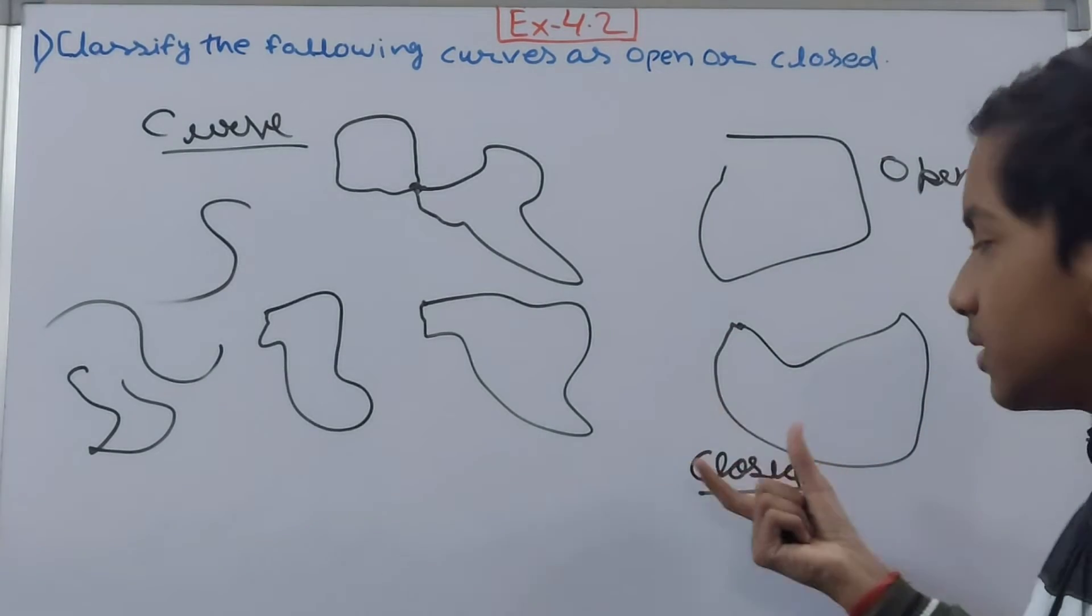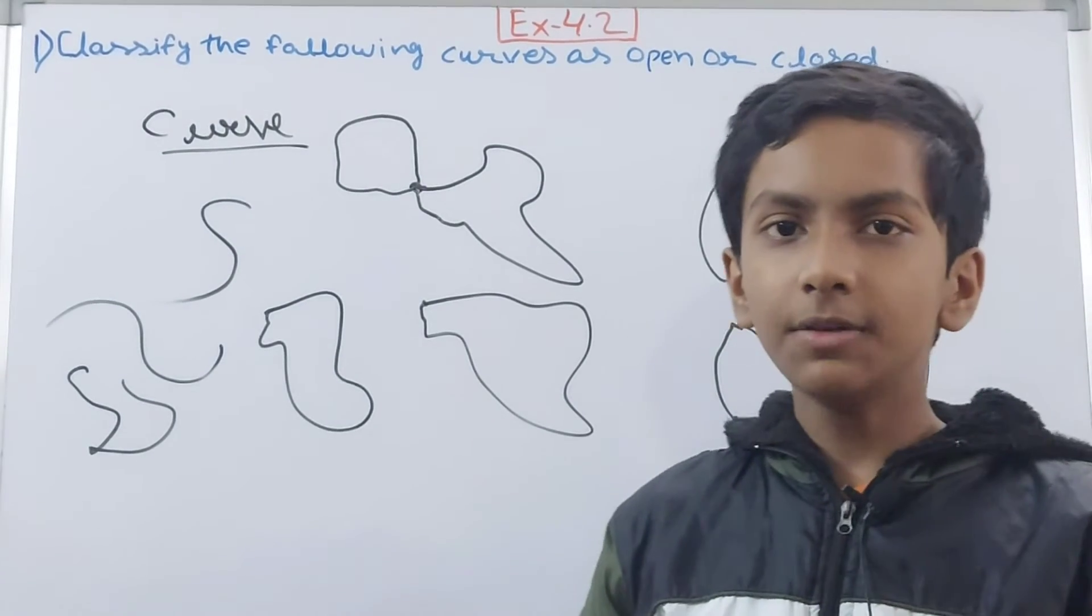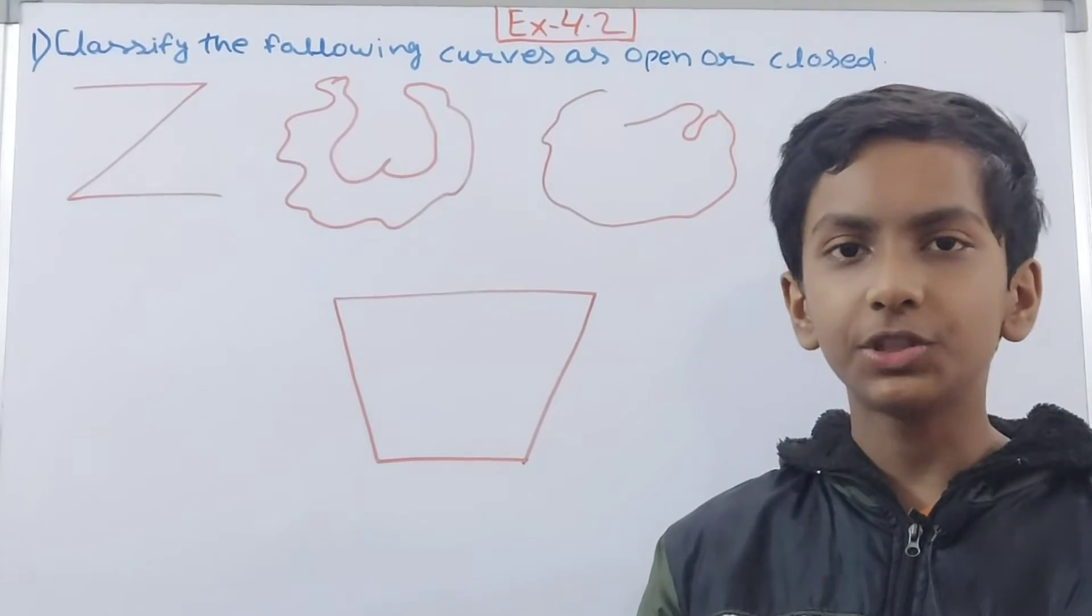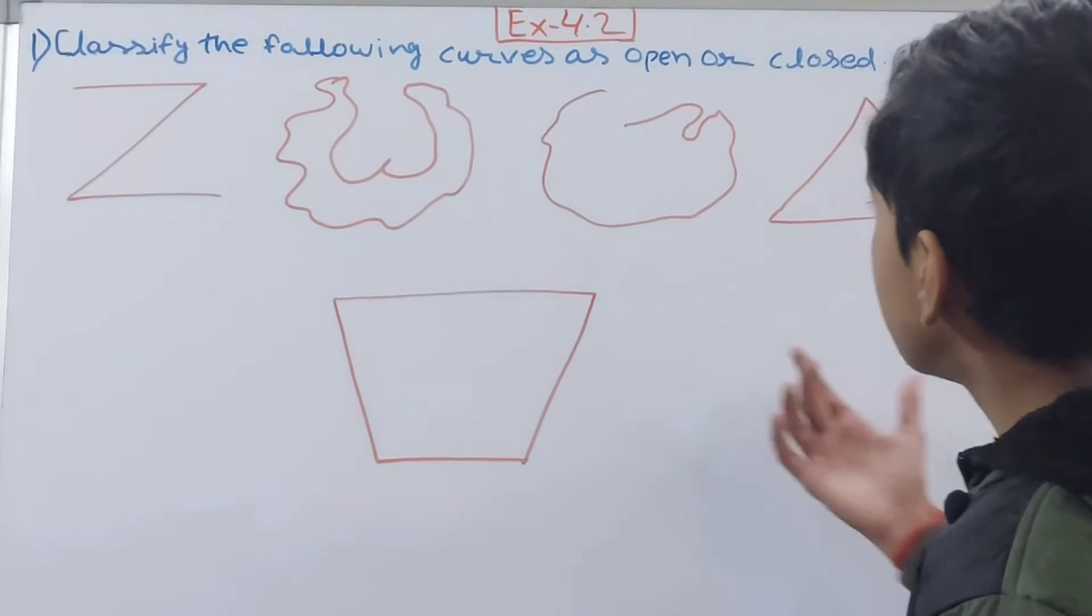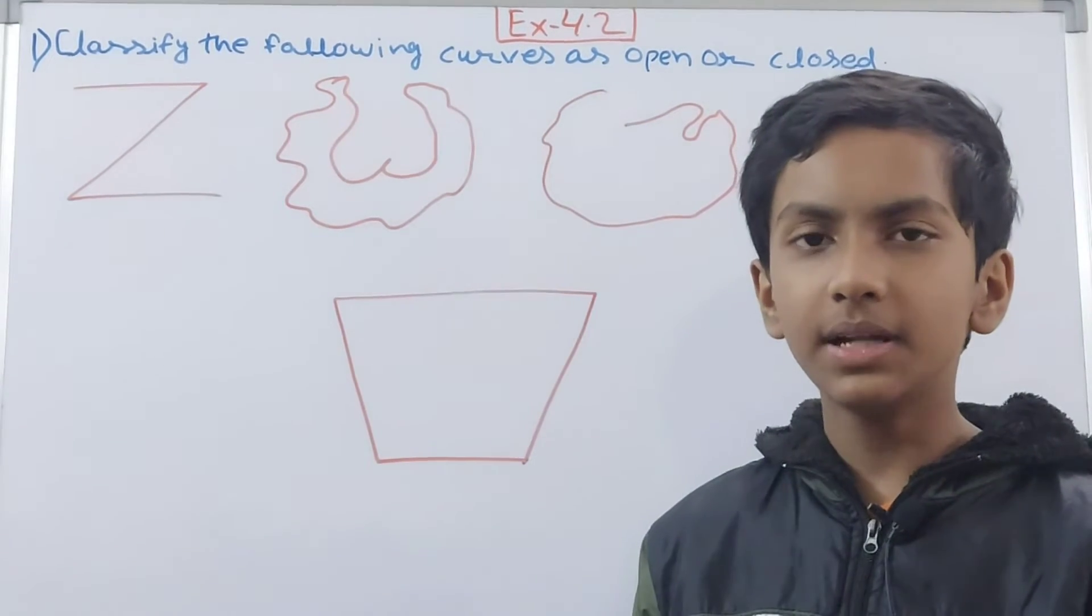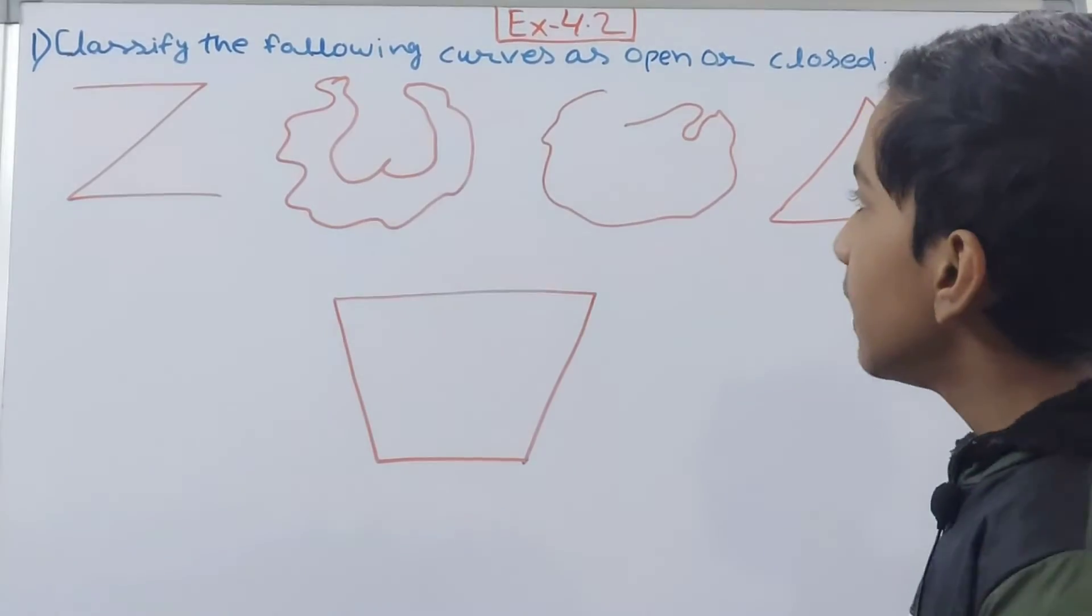So end point and initial point are at the same place here to complete the boundary. So this is called a closed figure. Now related to this, we will solve the first question of this exercise. These are the figures given, so we can clearly and easily identify the difference between closed and open. It is not very hard.